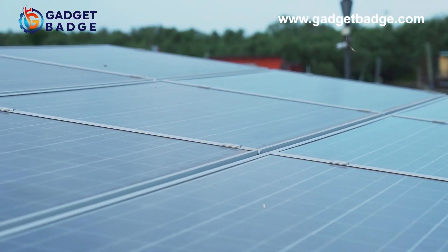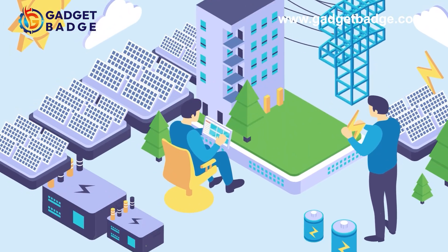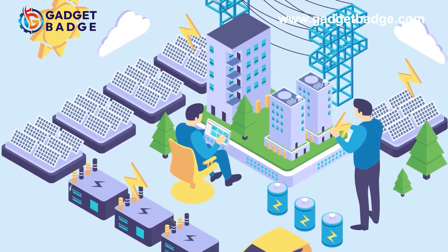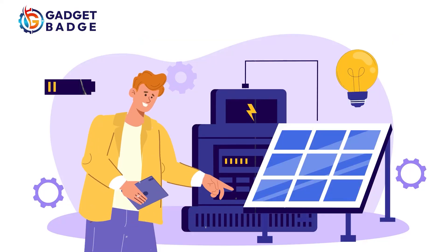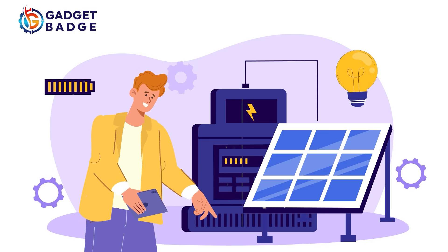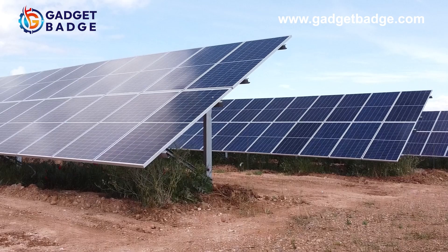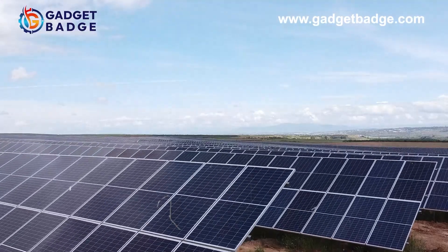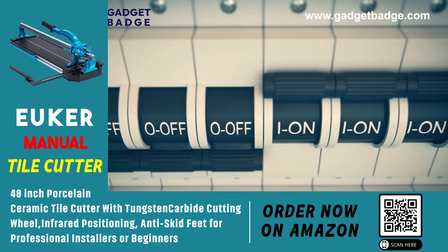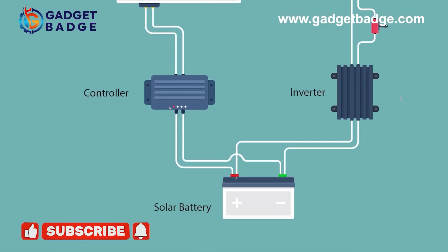Let's summarize the benefits of using an AST. First, it provides seamless, uninterrupted power by automatically switching sources. Second, it helps reduce energy costs by prioritizing solar power and using the grid only as needed. Finally, it's an automatic system requiring minimal manual operation.